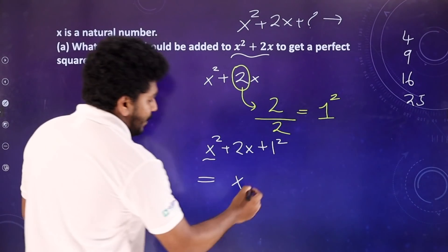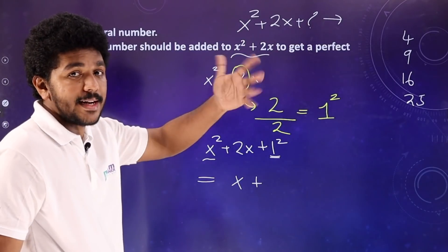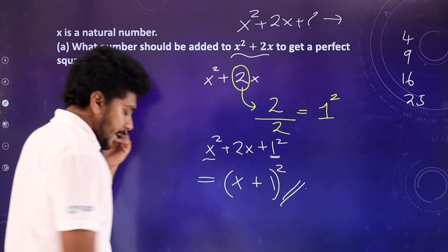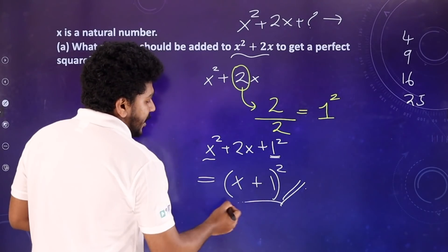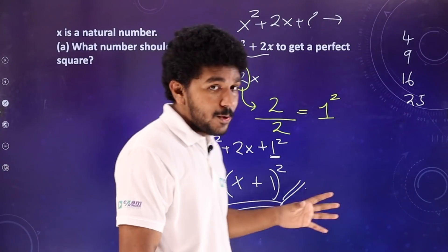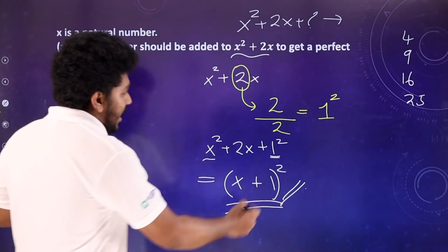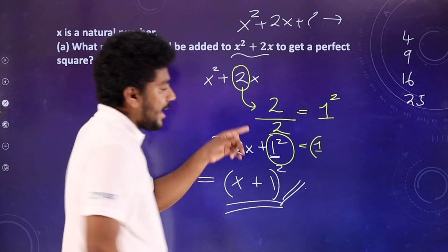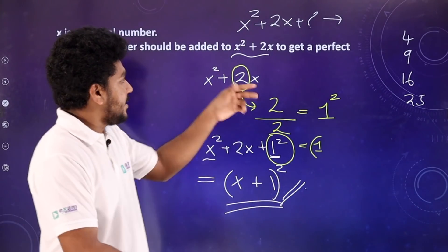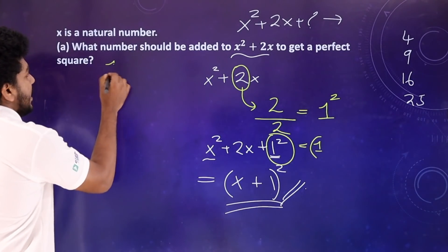Plus or minus: plus and plus gives plus, minus and minus gives minus. We have to consider the whole square. Basically, what is x plus 1 whole square? It is the perfect square. So x plus 1 whole square is the perfect square. It is not just x² plus 2x — what I added here is 1, because 1 squared equals 1. I add this 1, and x plus 1 whole square is the perfect square.